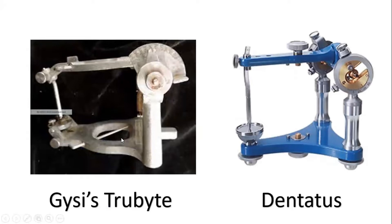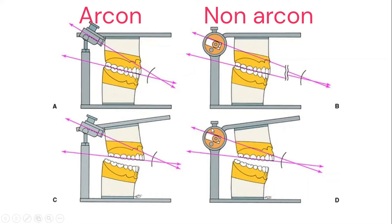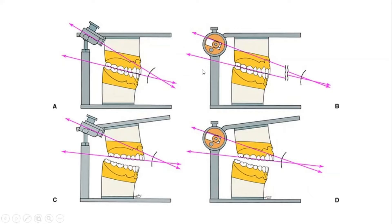Other examples of non-arcon articulators are the IC2 byte articulator and Denar's articulator. To understand why we need an arcon articulator, consider this diagram: in the arcon articulator, the condylar guidance is attached to the upper member and the condylar element to the lower member. In the non-arcon articulator, the condylar guidance is attached to the lower member and the condylar element to the upper member.